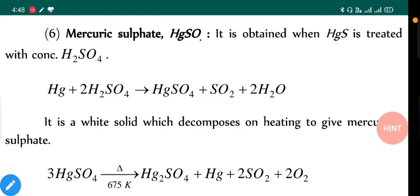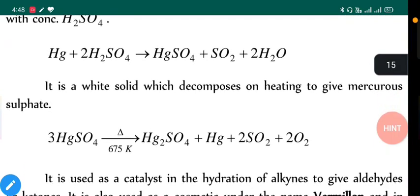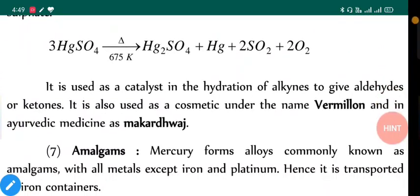It is white solid which decomposes on heating to give mercurous sulfate: HgSO₄ → Hg₂SO₄. It is used as catalyst in hydration of alkenes to give aldehydes or ketones. It is also used as a cosmetic under the name Vermilion and in ayurvedic medicine as Makardhwaj.